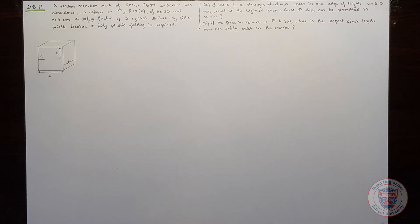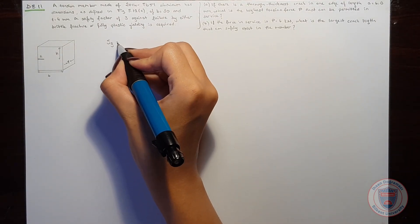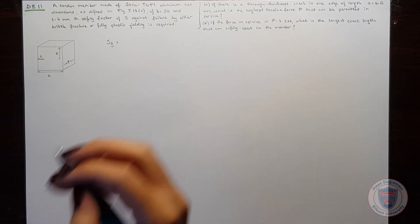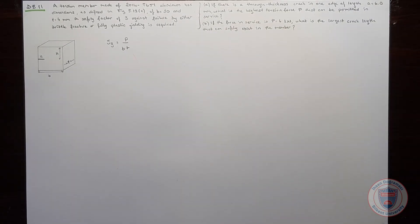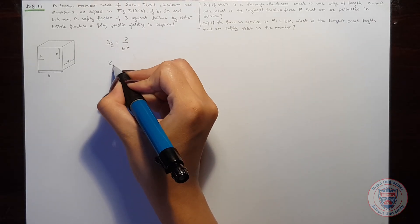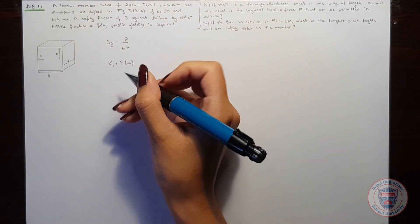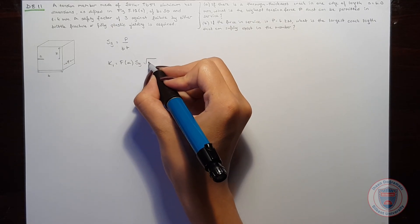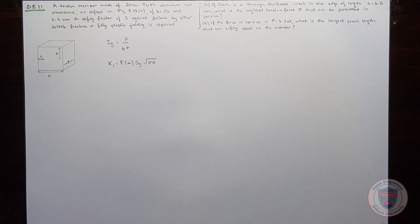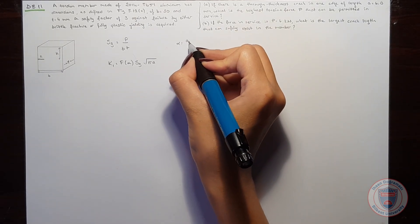We know that for a crack in one edge, our stress S_gross will be equal to force over BT. And the stress intensity factor will be the form factor times the stress times pi A. And we know that alpha is A over B.